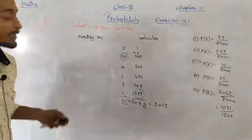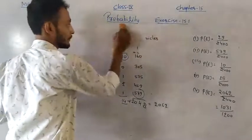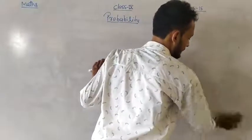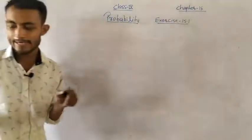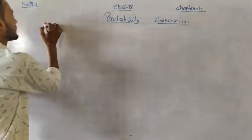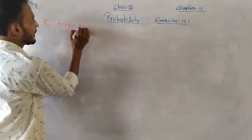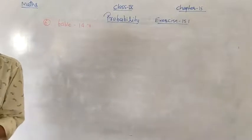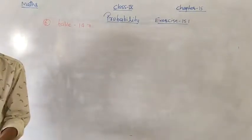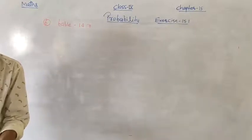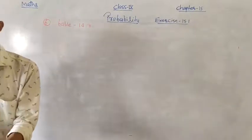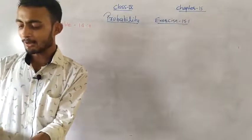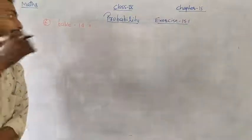Question 6: Refer to Table 14.7. Find the probability that a student obtained less than 20% marks in mathematics. From the table on page 251, students scoring 0–20 = 7 students. Total students = 90. So probability = 7/90.